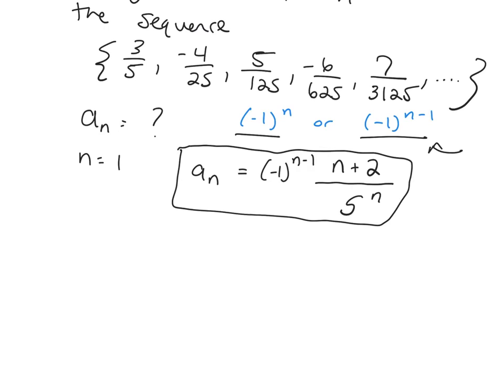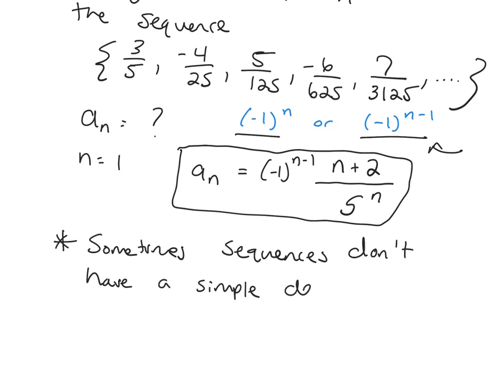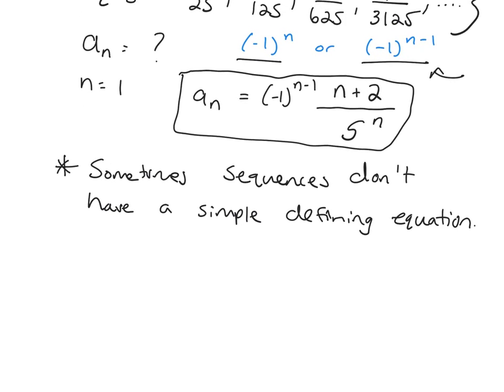So the examples we've seen so far of sequences, they all have these nice formulas for them. But that's not always true. So I wanted to mention that to you. Sometimes sequences don't have a simple defining equation. So the most famous, probably, of these would be the Fibonacci sequence.